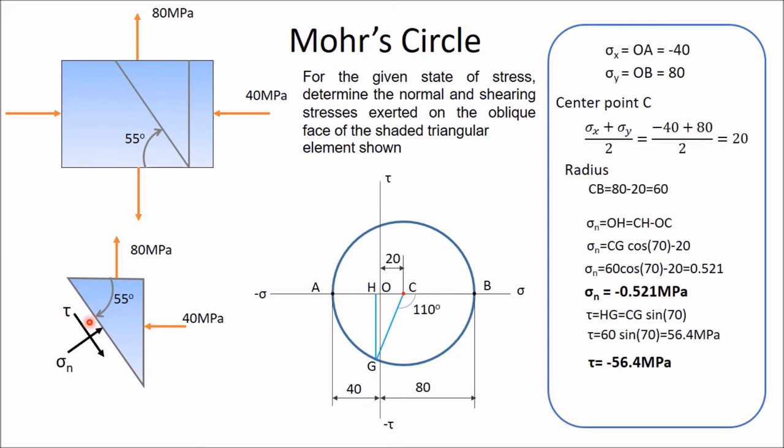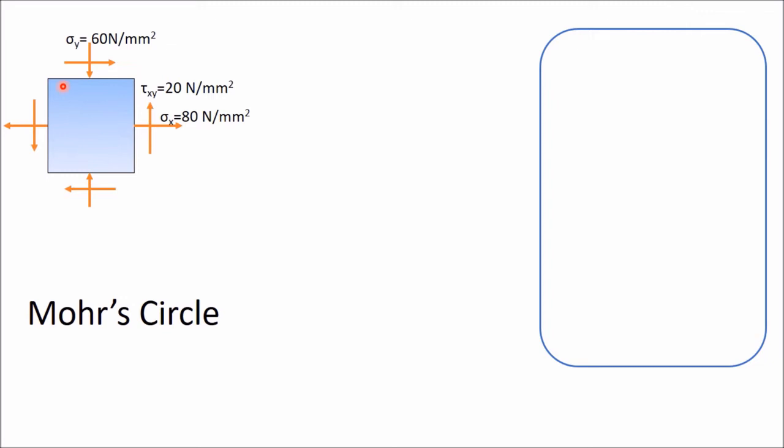So this is the actual direction of normal stress and shear stress in this particular plane. In this way you can determine normal stress and shear stress in any plane using Mohr's circle. Now the next problem involves an element subjected to a combined stress state, and in this problem we will determine only principal stresses and maximum shear stress using the Mohr circle.